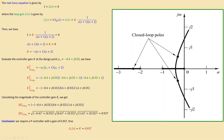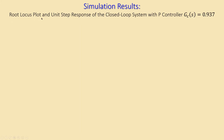Looking at the root locus plot in more detail: the open-loop poles (crosses) are at 0, −1, and −2. With the selected gain, these three poles move to new positions. The pole at −2 moves further left, while the other two poles approach each other, break away, and form a complex conjugate pair. We assume these complex poles are the dominant poles — this is the basis of our calculation.